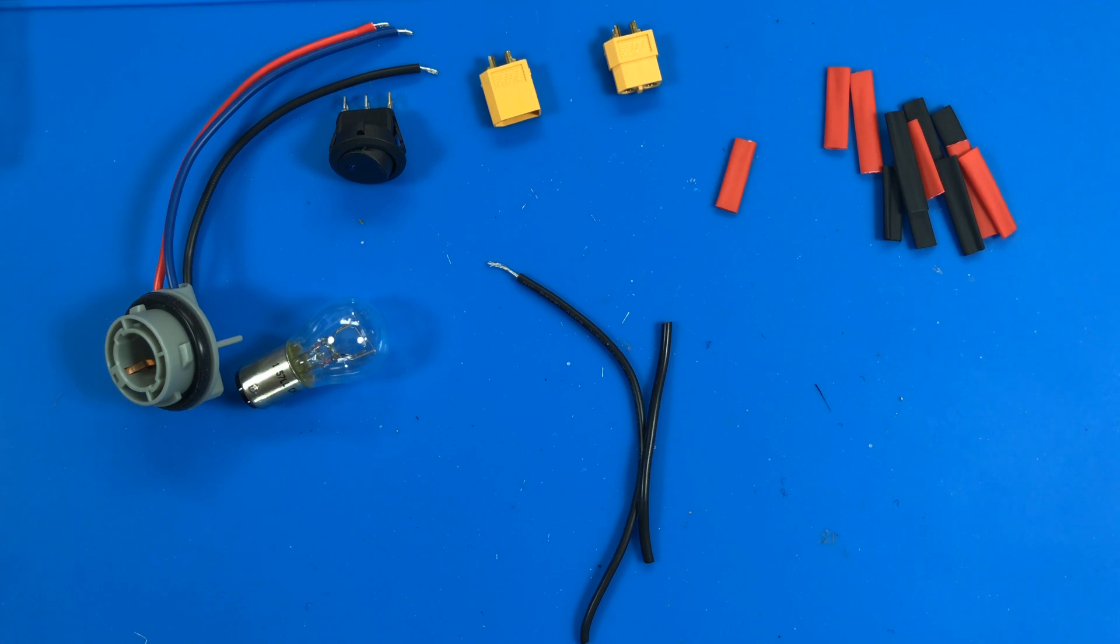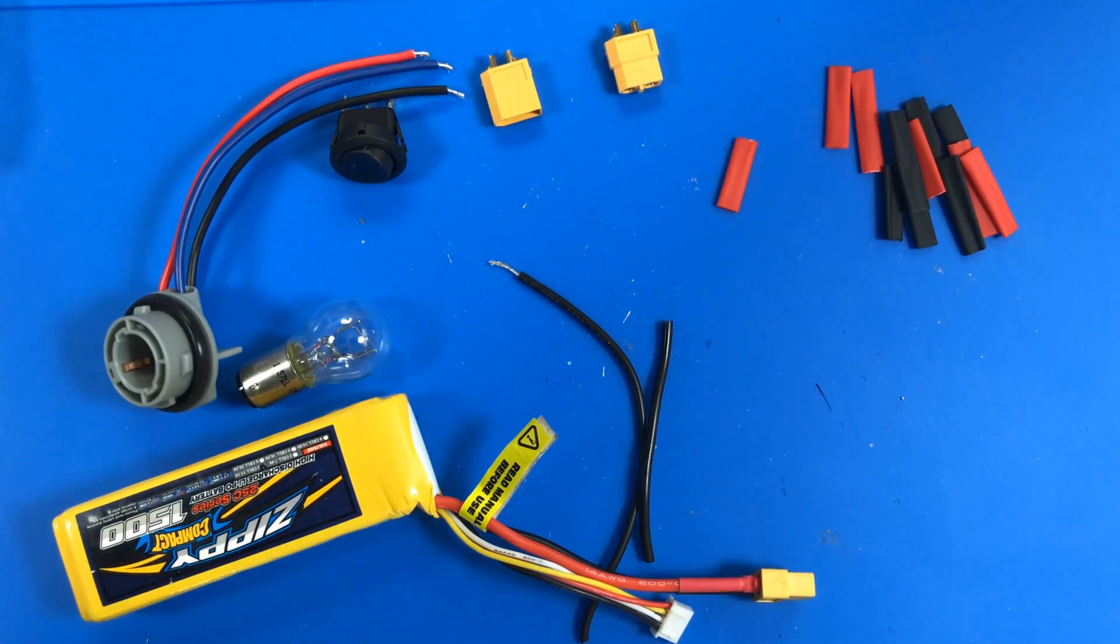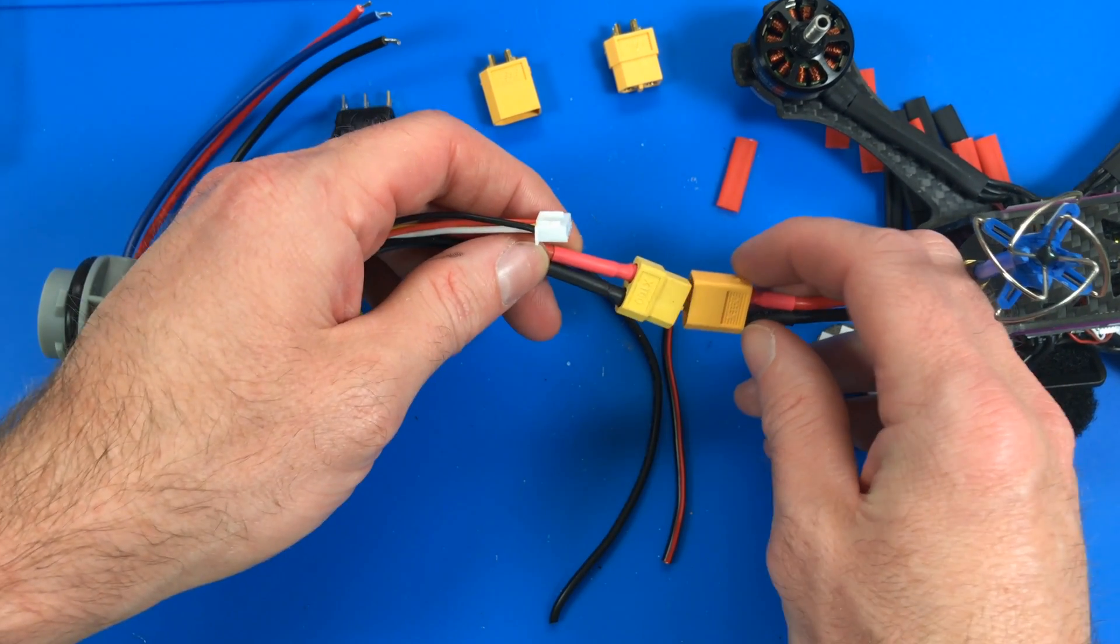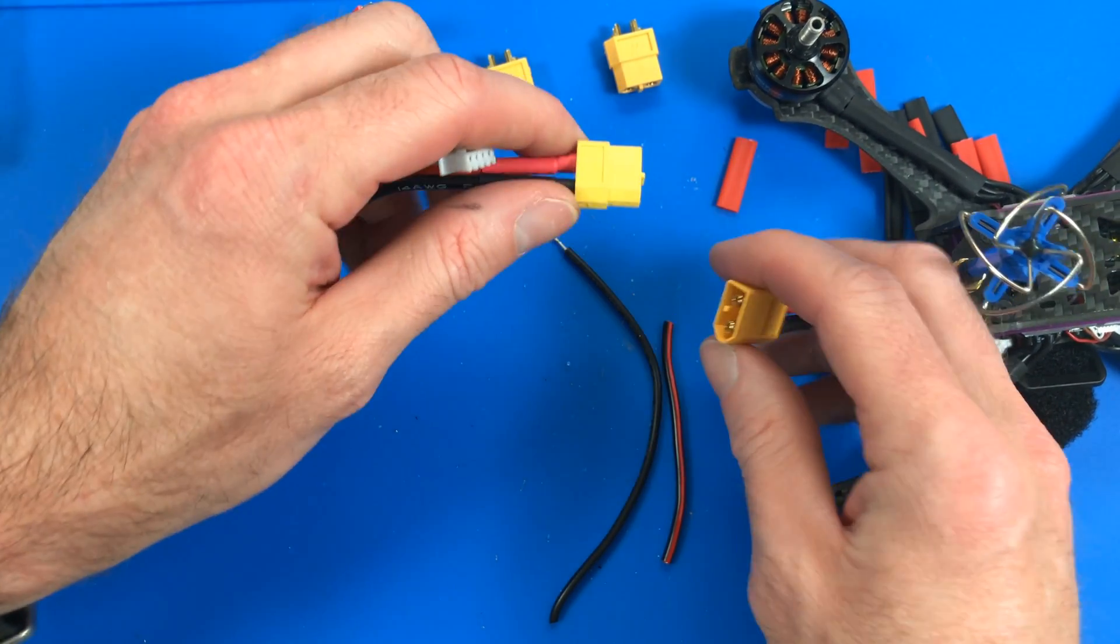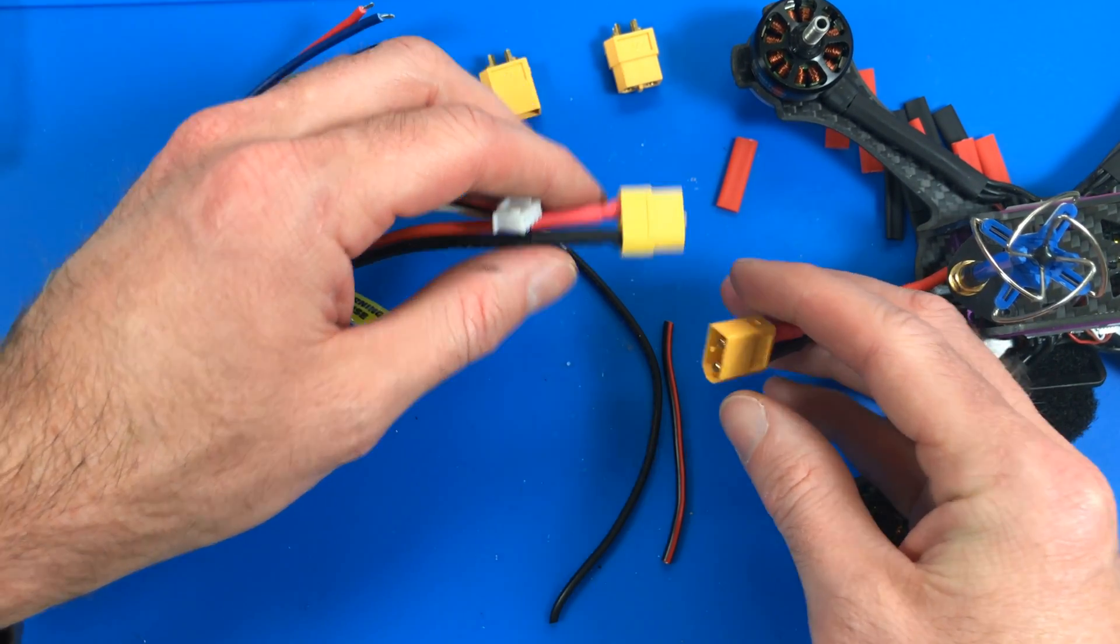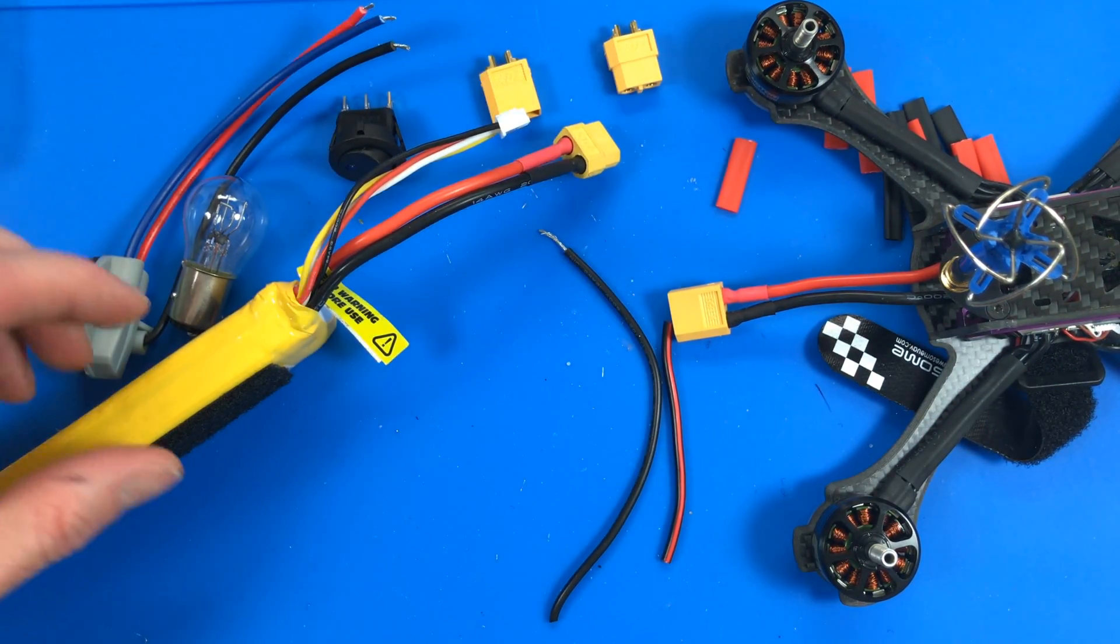If you haven't seen anybody else's videos about them, it is a device that you put between the battery and the drone that you're going to connect. So when you're going to first connect it, instead of just connecting the battery, you put this in the middle. And if there's a short, it will keep you from frying your electronics, at least do a good job of preventing it.